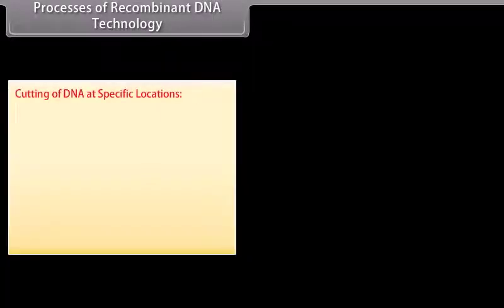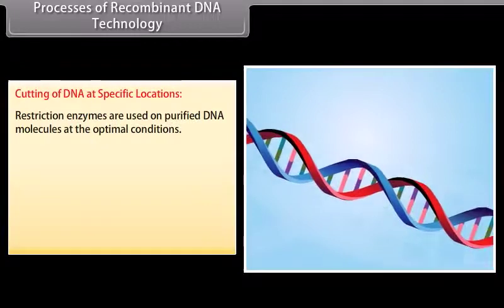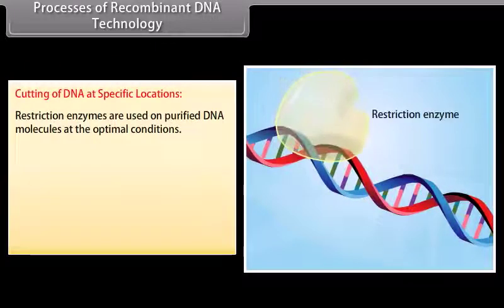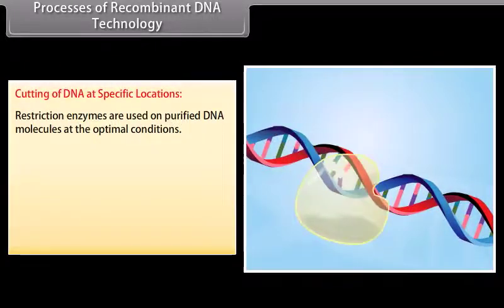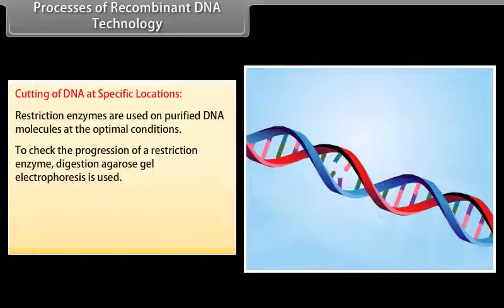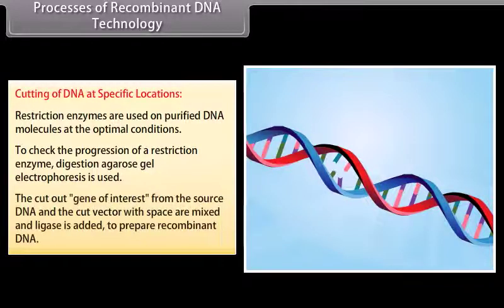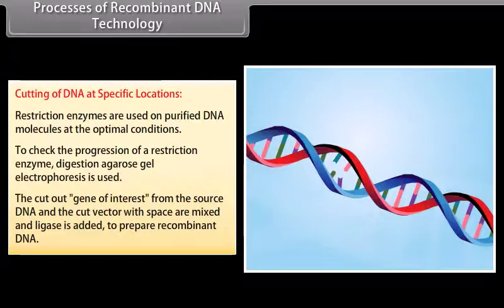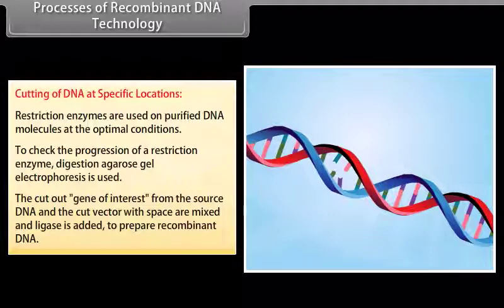Cutting of DNA at specific locations. Restriction enzymes are used on purified DNA molecules under optimal conditions. To check the progression of a restriction enzyme digestion, agarose gel electrophoresis is used. The cut-out gene of interest from the source DNA and the cut vector with space are mixed and ligase is added to prepare recombinant DNA.